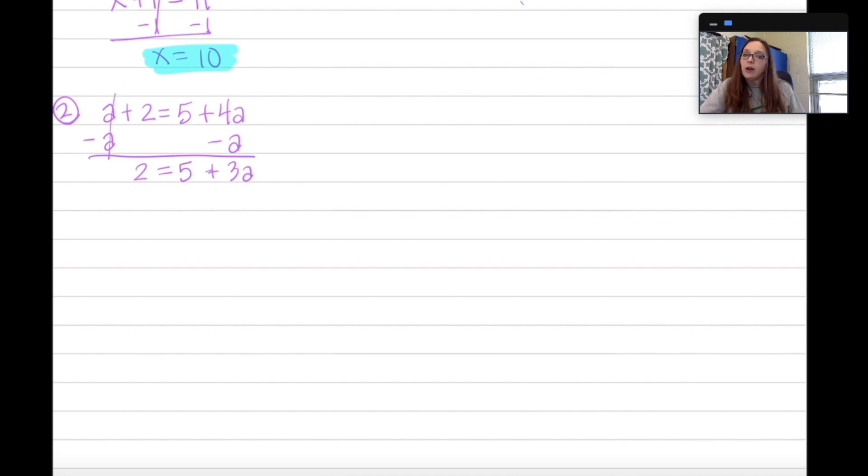Now, this is a two-step equation, which we've already reviewed in our review unit. So we're just going to follow those same steps to solve. I'm going to subtract 5 on each side. 2 minus 5 is negative 3. 5 minus 5 is 0 or makes a 0 pair. Bring down my equals and I'm left with positive 3A. Now we divide both sides by 3. Negative 3 divided by 3 is negative 1. So I'm left with negative 1 equals A, which is the same as A equals negative 1. You don't need to flip it back around. Let's go write our final answer down on the front page.